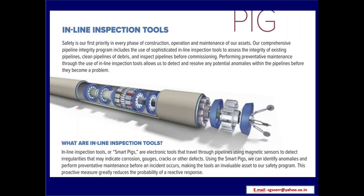Inline inspection tools — or smart pigs — are electronic tools that travel through pipelines using magnetic sensors to detect irregularities that may indicate corrosion, gouges, cracks, or other defects. Using smart pigs, we can identify anomalies and perform preventative maintenance before an accident occurs, making them an invaluable asset to the safety program. This proactive measure greatly reduces the probability of a reactive response.